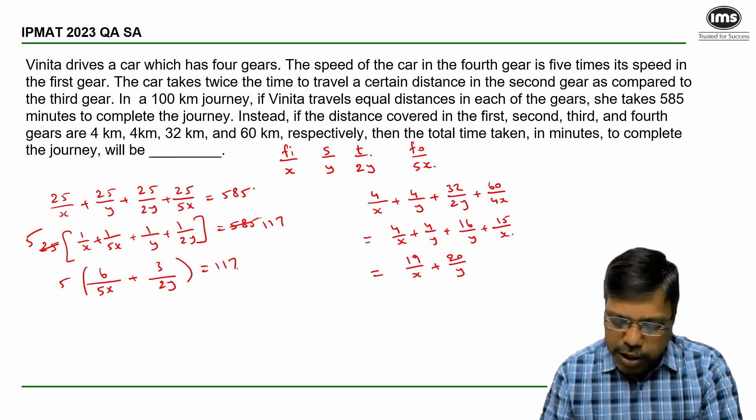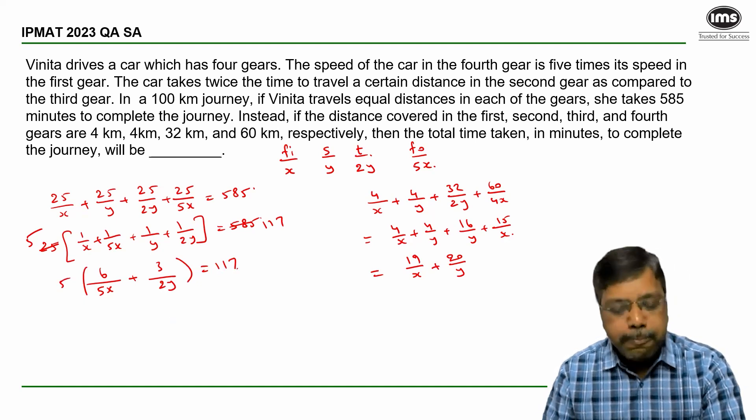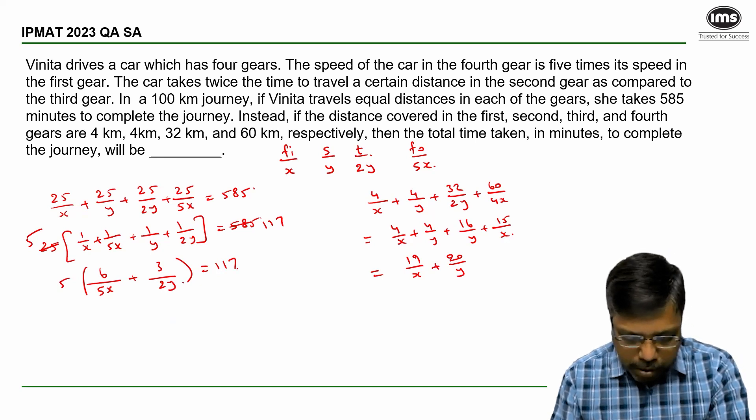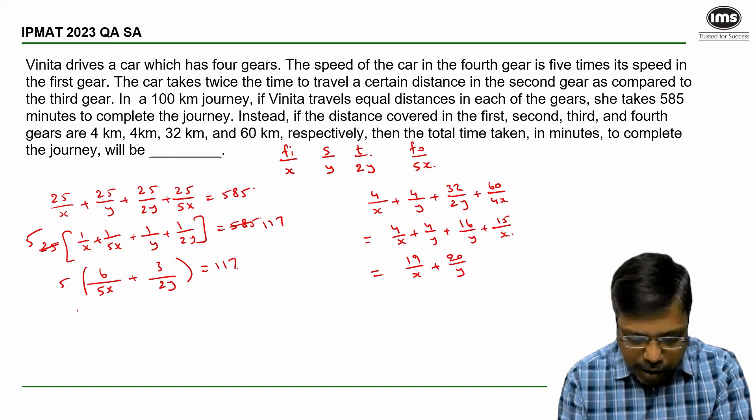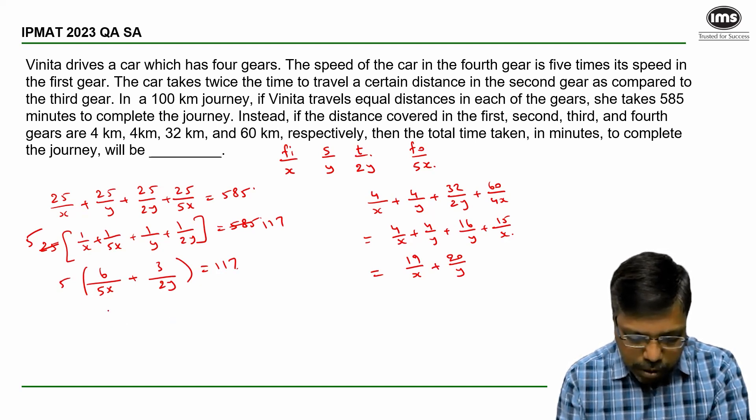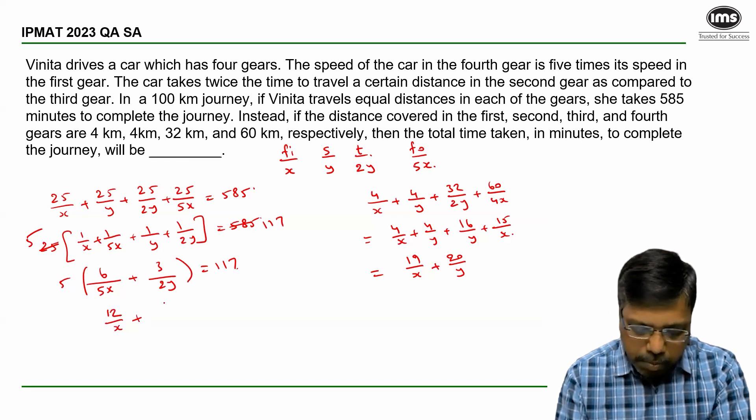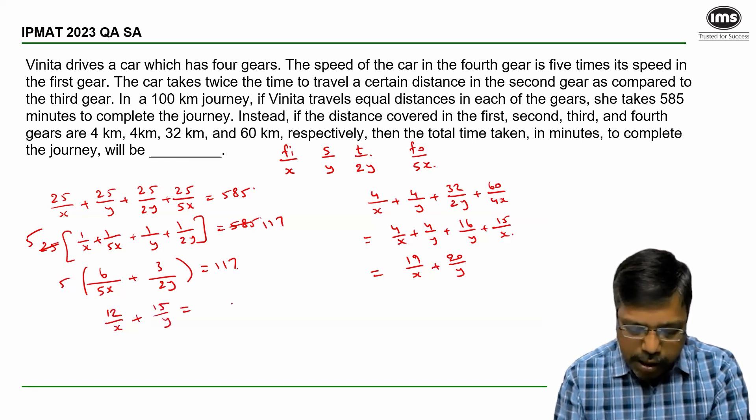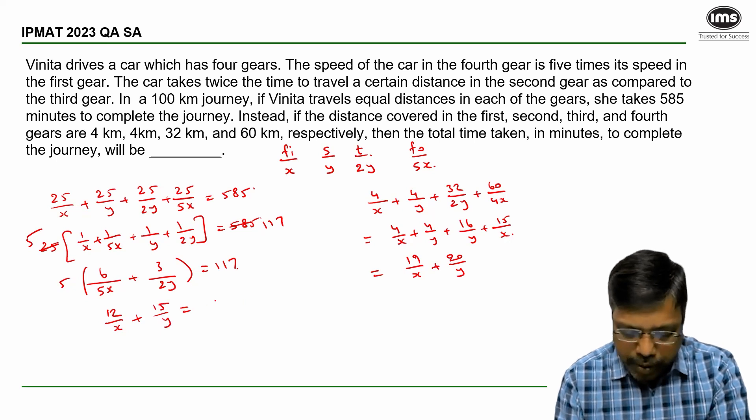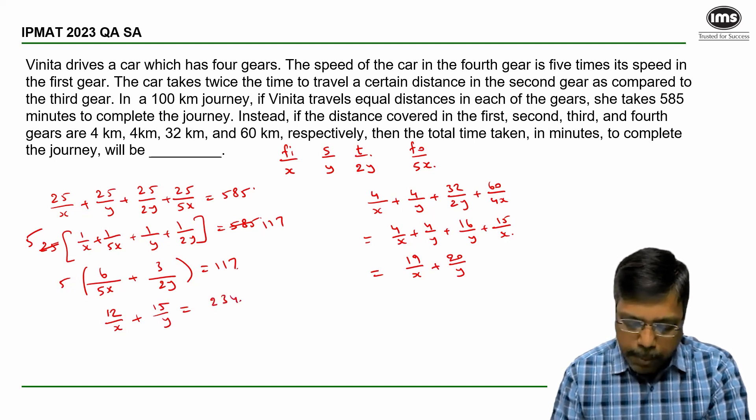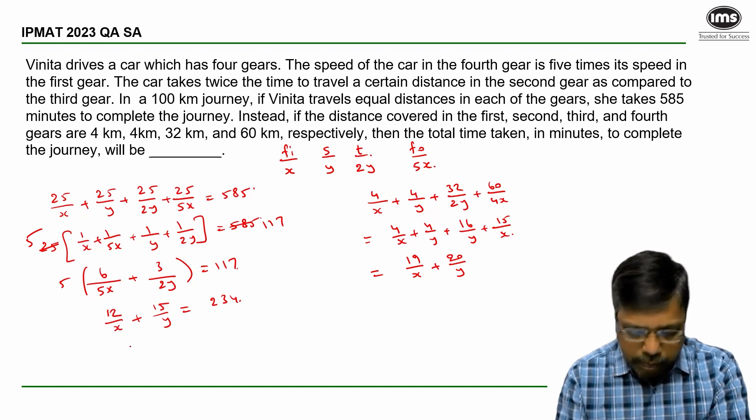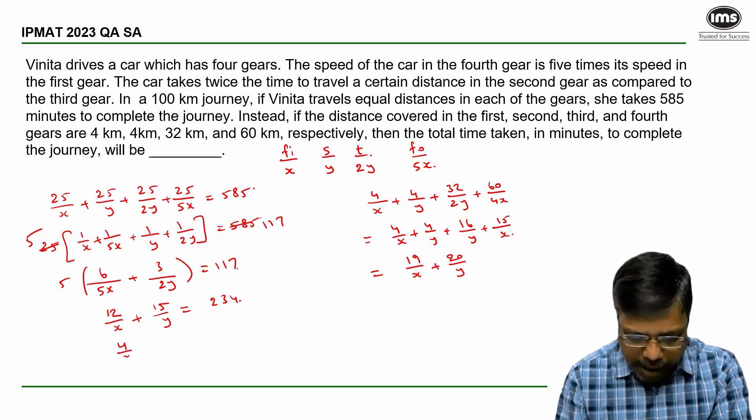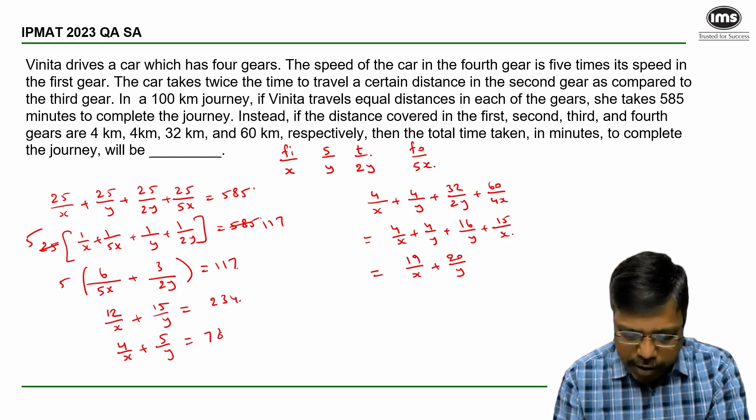I need to make the coefficient of x and y in the denominators as 1. So I will multiply. Already there is a 5. So let me multiply with 2 on both sides. So then it becomes 12 by x plus 15 by y is equal to 117 into 2. Now 117 into 2 is 234. Now I can cancel out a 3 common. If I cancel out a 3, 4 by x plus 5 by y is equal to 78.